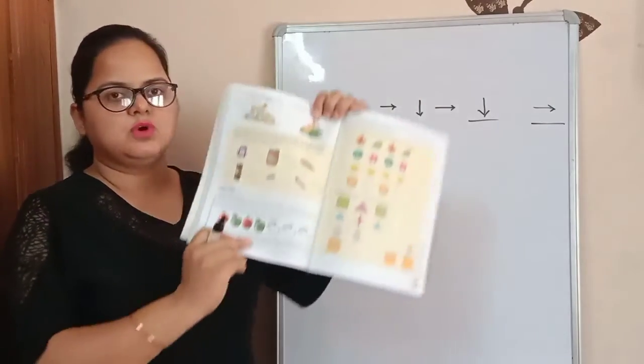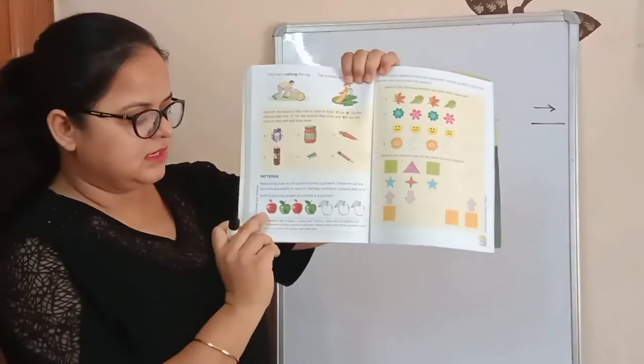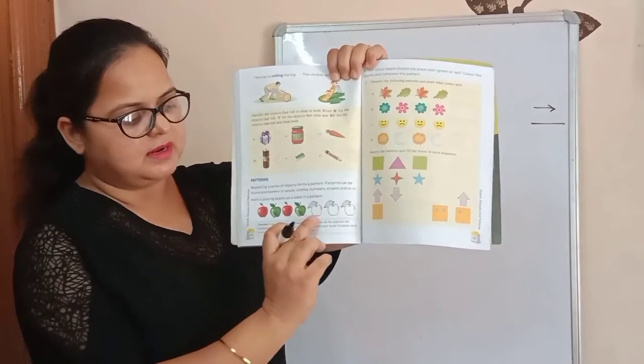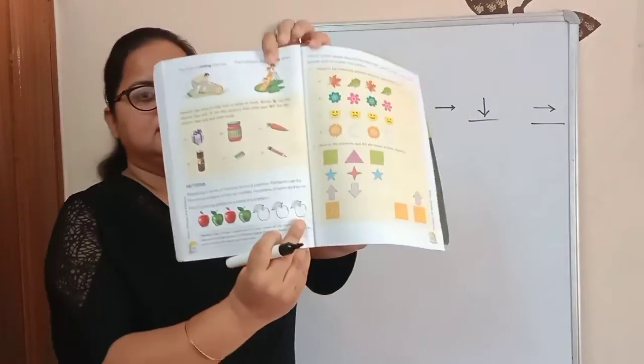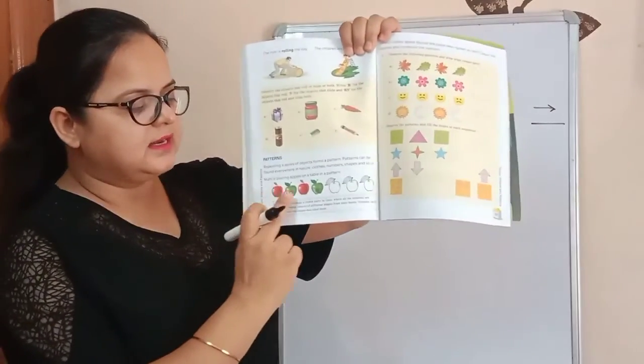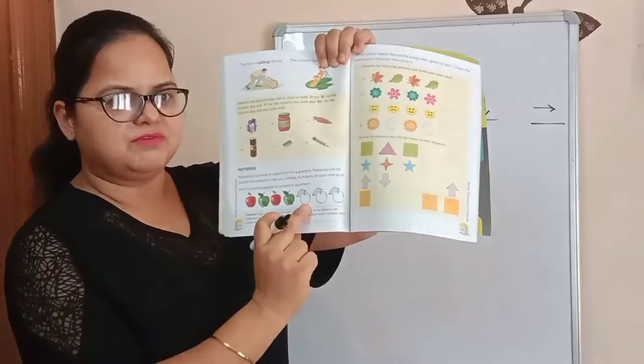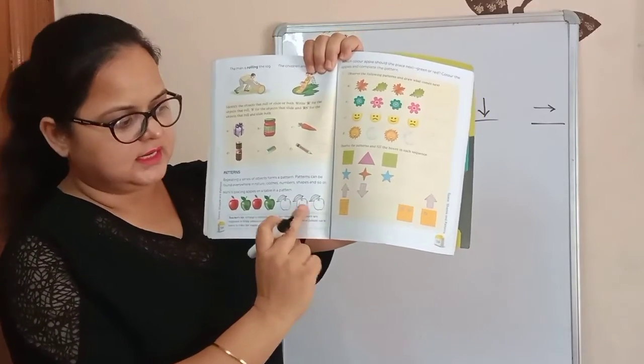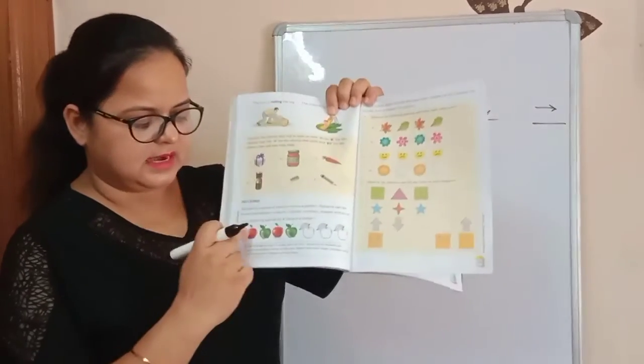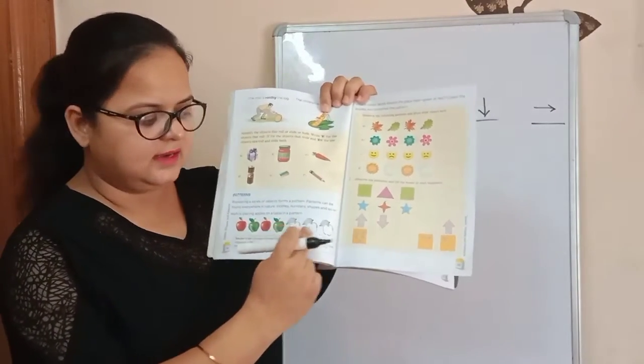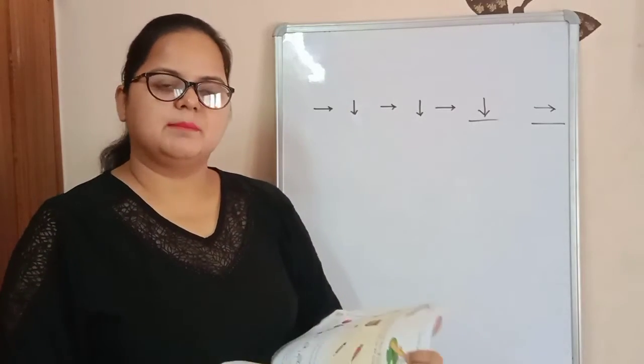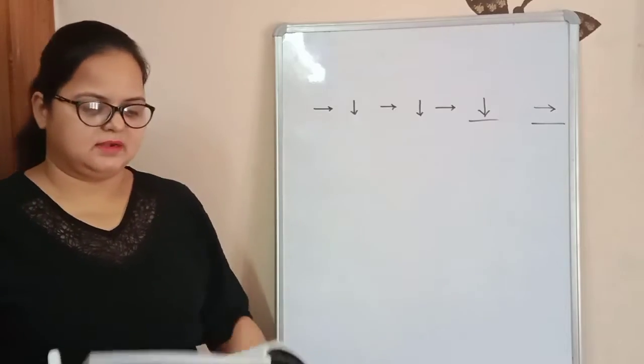I hope you all understand. See in this book. Here is an example given. Red apple, green apple, red apple, green apple. Then these are blank. Here you have to fill the color. See red, green, red, green. Here you will fill red color, green color, and then red color again. Understand? Red, green, red, green, again red, green, red. This is called pattern. Isko kya kette hai? Pattern.